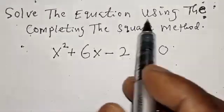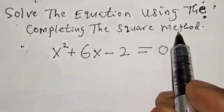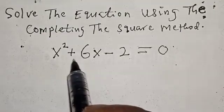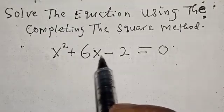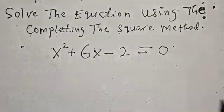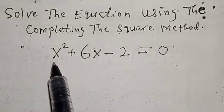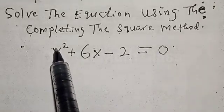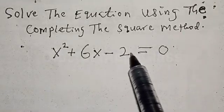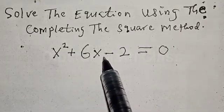Solve the equation using the completing the square method. x² + 6x - 2 = 0. Hi everyone, welcome to my class. In this class, we want to look at how we can quickly solve this quadratic equation using the completing the square method.